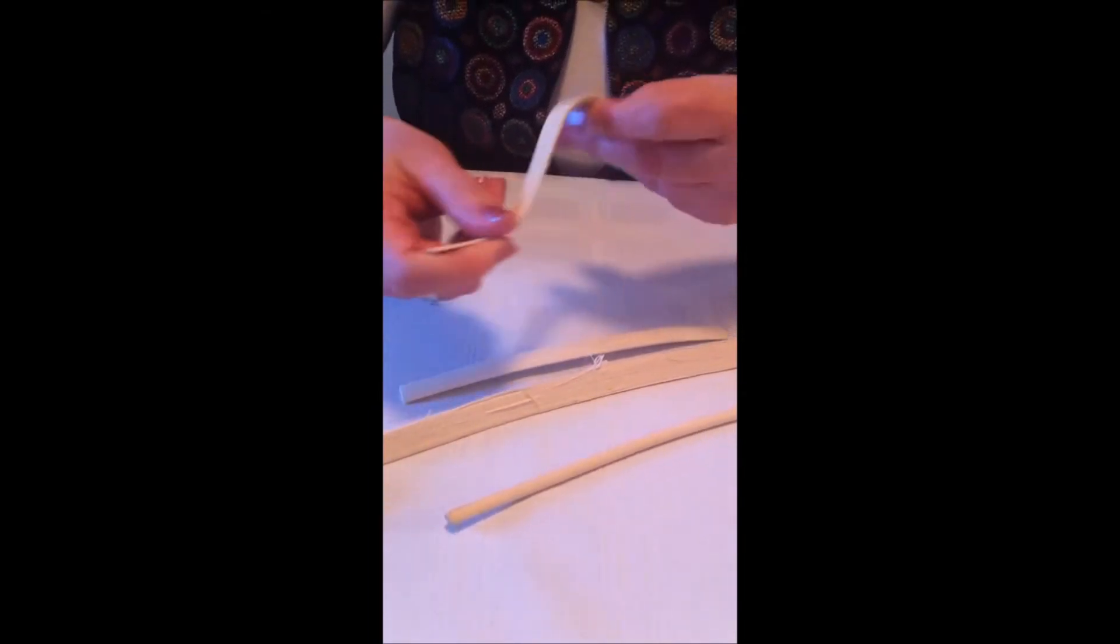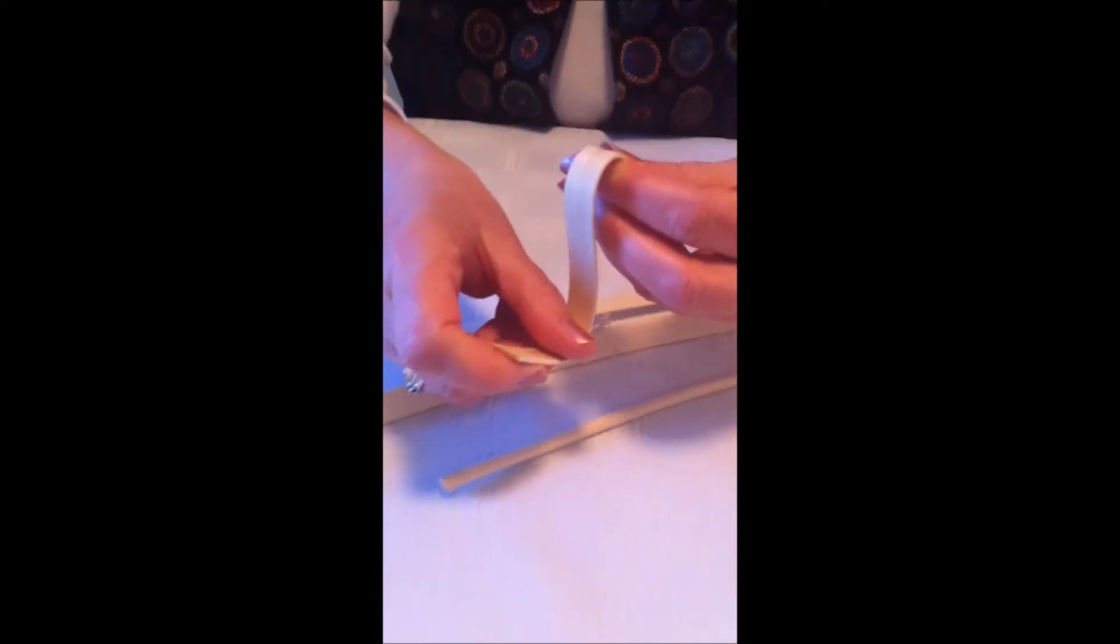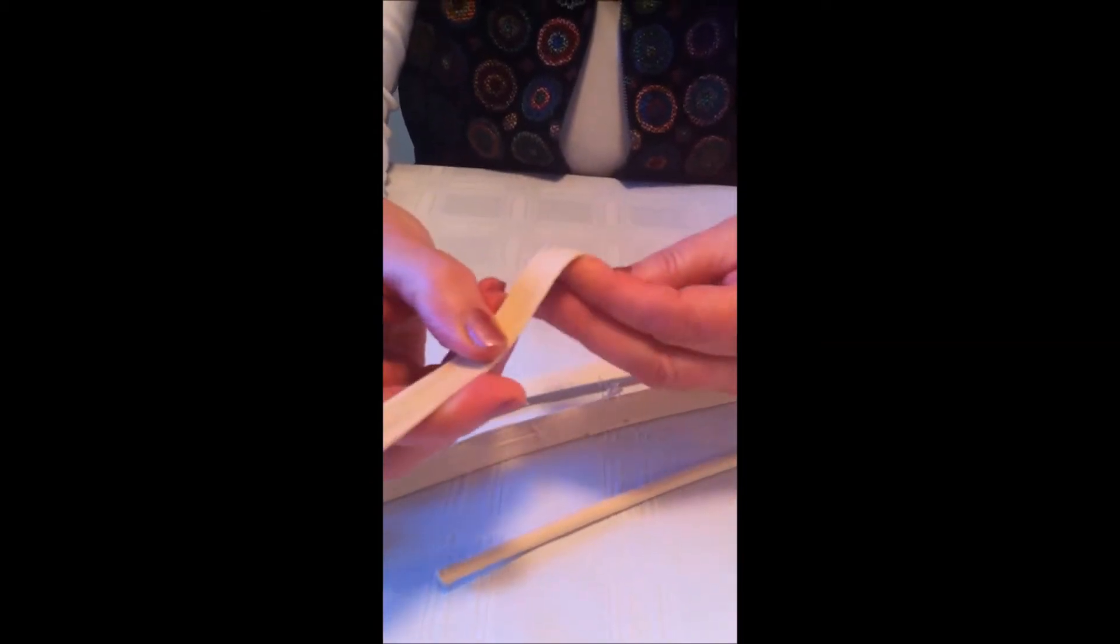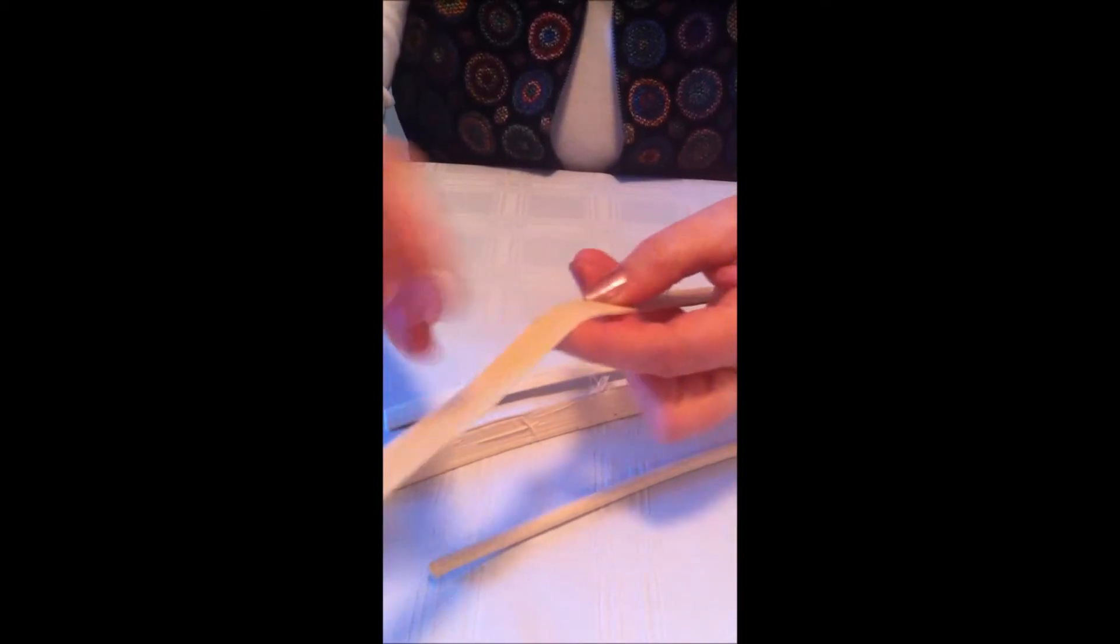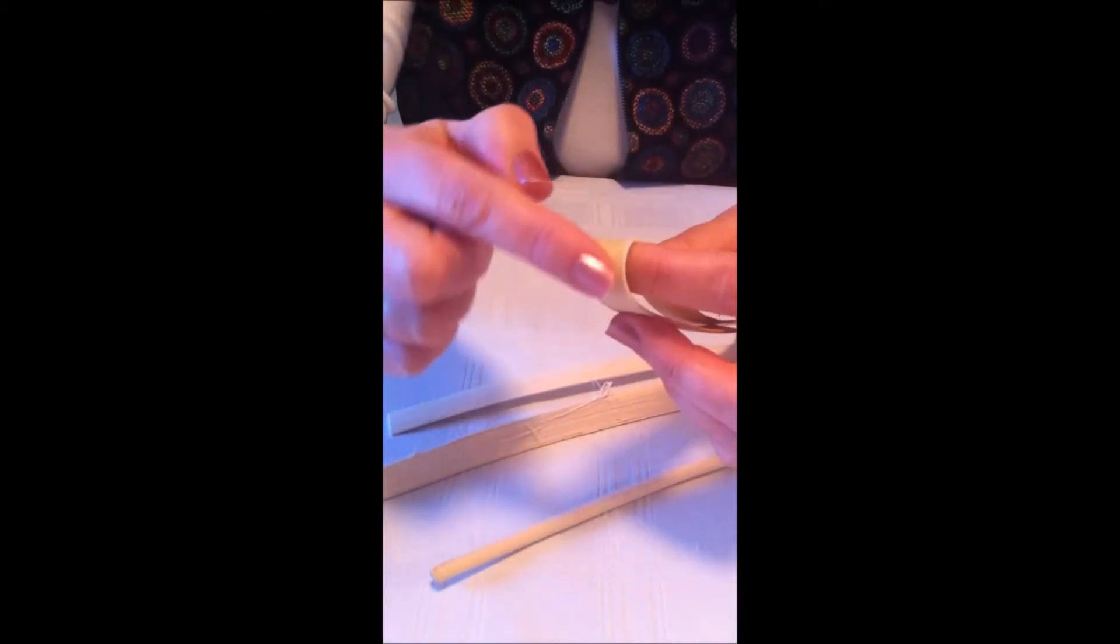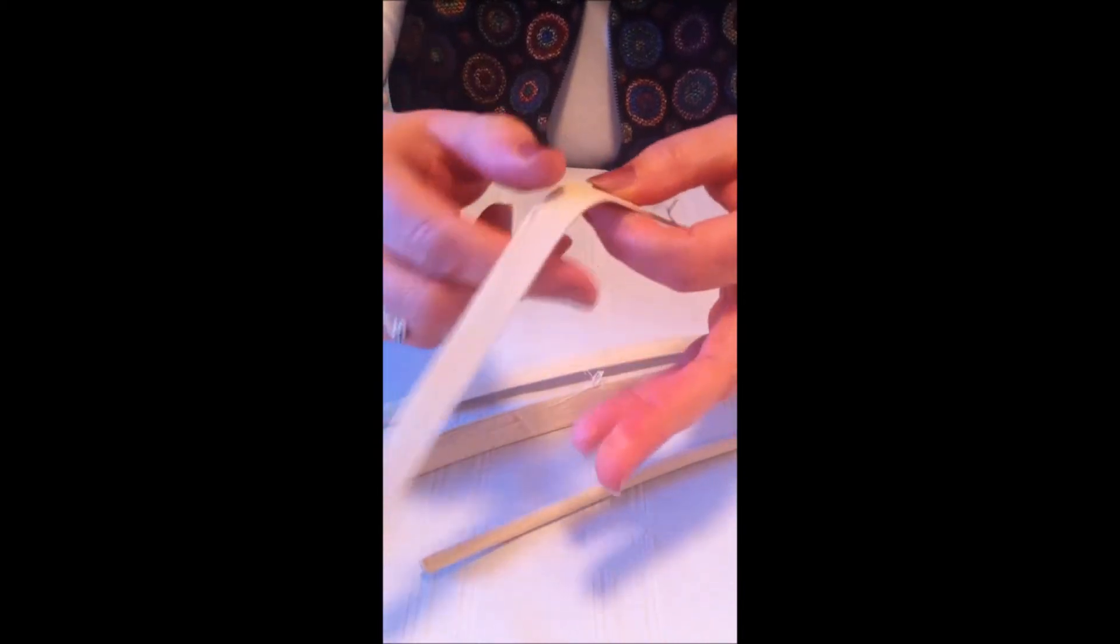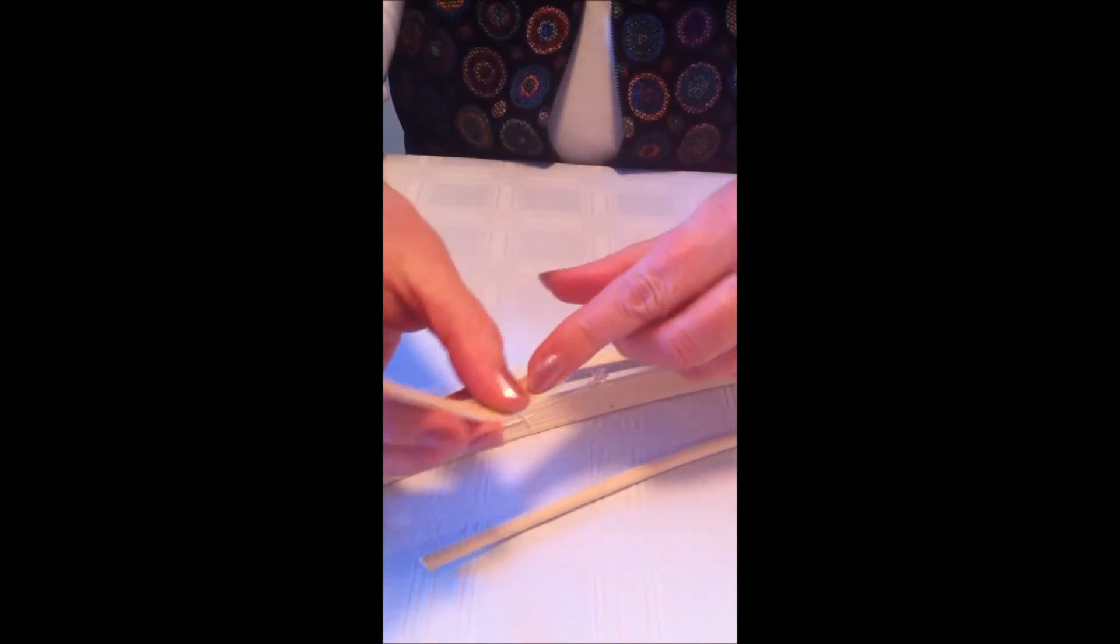When you bend it, one side will feel rougher than the other. That would be your wrong side. So lots of times you can see little fuzzies will come up here or you just feel that it's rougher.